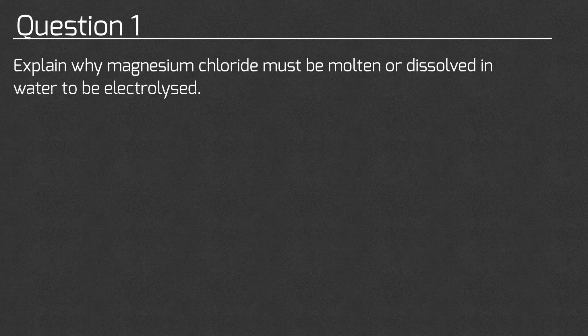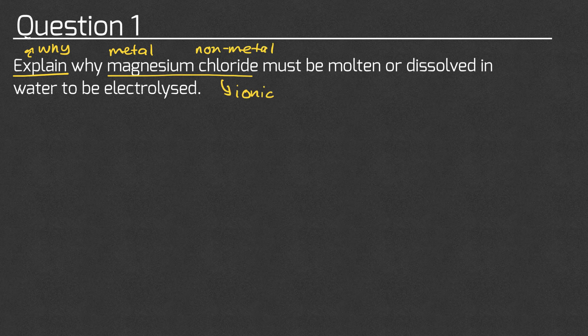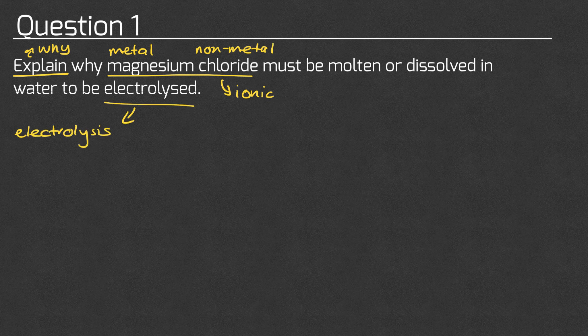We're going to start off by breaking down what the question is asking us. We need to explain, which means give a reason why. We have magnesium chloride — magnesium is the metal, chloride is the non-metal — so this must be an ionic compound. And electrolyzed means we must be doing electrolysis.